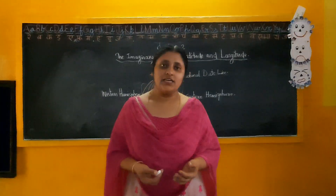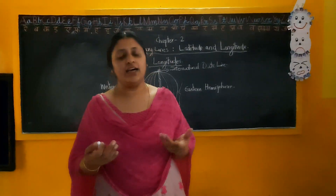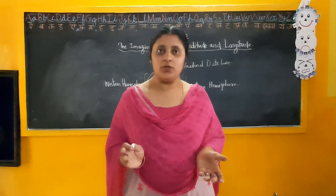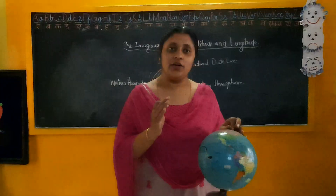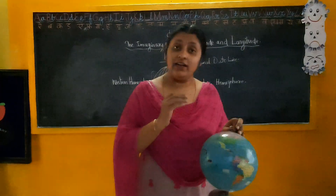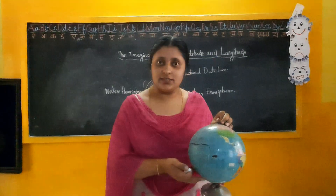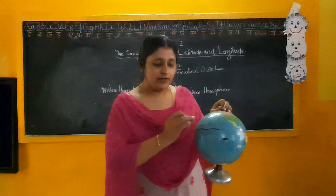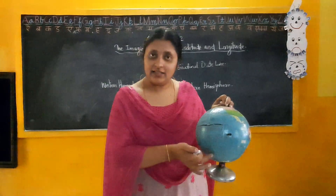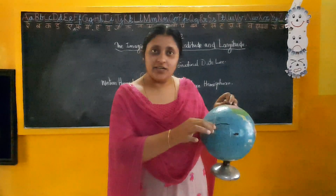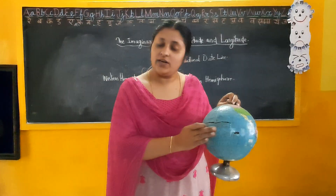So children, in this chapter we learnt about latitudes and longitudes and what are the features of latitudes and longitudes. In the first video, we learnt how to locate a place in an atlas or in a globe. I showed that these vertical lines and horizontal lines are there, they will meet at one point, and then after that we can locate a place in our atlas.